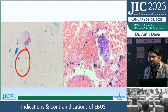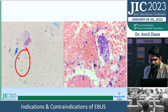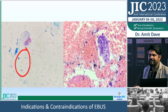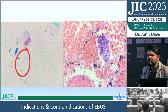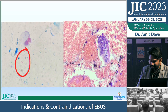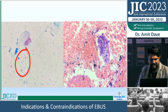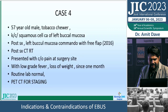He was treated with anti-Koch's therapy and within just three weeks his sodium level normalized. It was adrenal insufficiency due to subclinical tuberculosis — an excellent example of EBUS guiding diagnosis beyond the obvious.